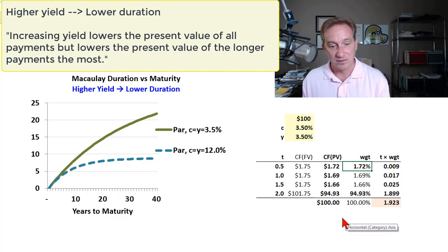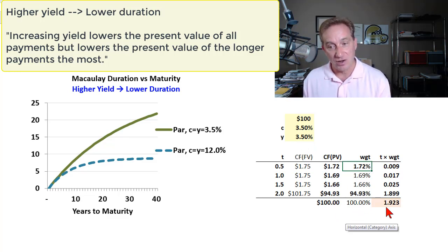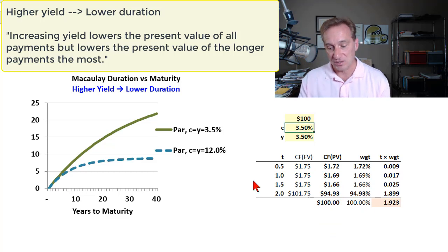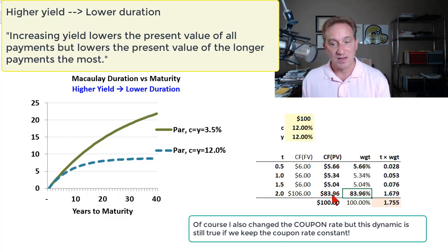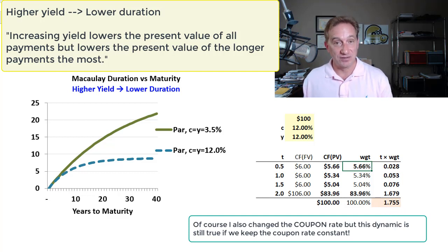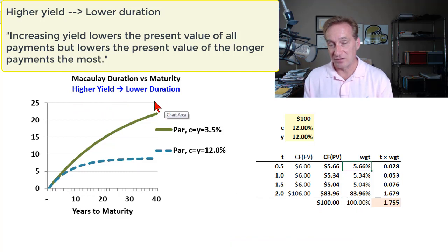As Tuckman states: the intuition is that increasing yield lowers the present value of all payments, but lowers the present value of the longer payments the most. Shifting to 12% yield, the weights of early cash flows actually increase relatively, while the weight of the final cash flow drops the most. So Macaulay duration — the weighted average maturity — shortens. That's the intuition: higher yield is associated with lower duration.